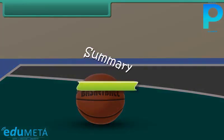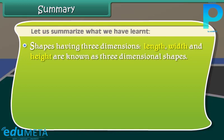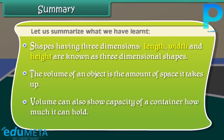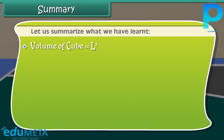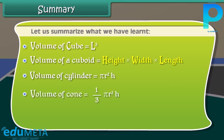Summary. Let us summarize what we have learned. Shapes having three dimensions - length, width and height - are known as three-dimensional shapes. The volume of an object is the amount of space it takes up. Volume can also show capacity of a container, how much it can hold. Volume of cube is L³. Volume of a cuboid is height × width × length. Volume of cylinder is πr²h. Volume of cone is 1/3 πr²h. Volume of sphere is 4/3 πr³.